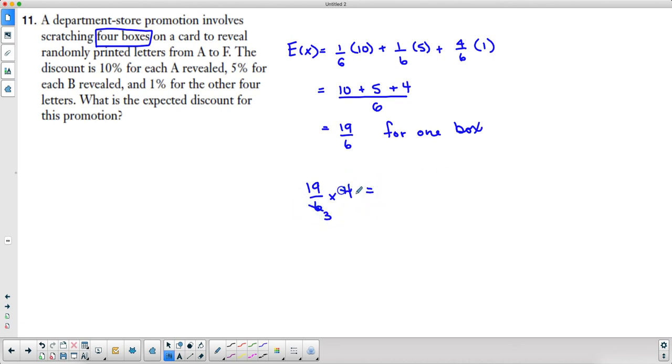Two goes into that three times. Two goes into that two times. So we have 38/3, which equals 12 and 2/3 of a percent. So the expected outcome on the card is 12 and 2/3 of a percent of a discount.